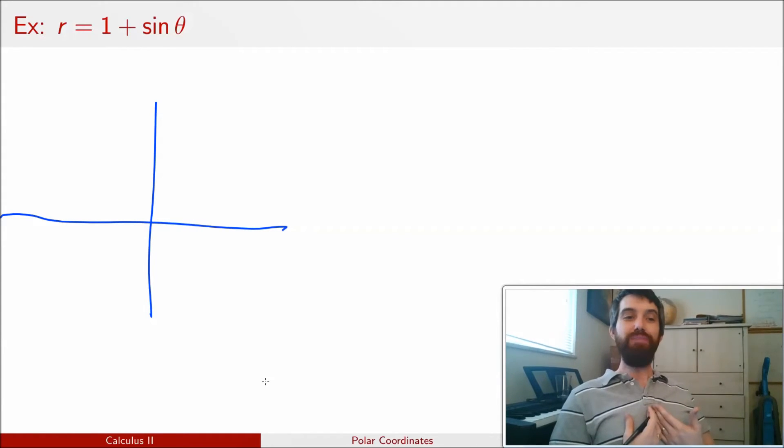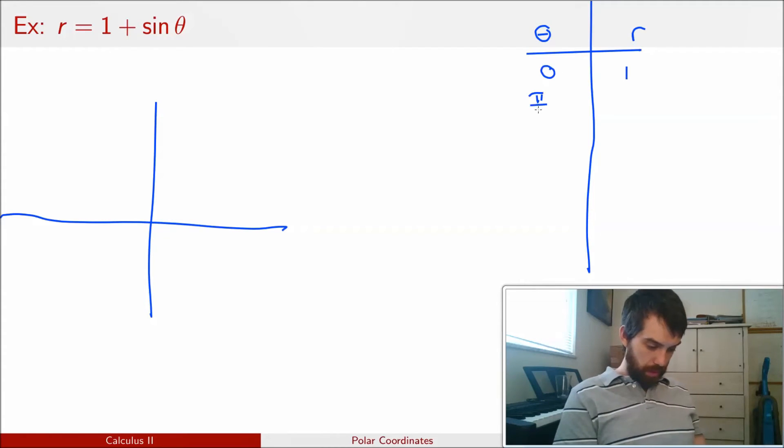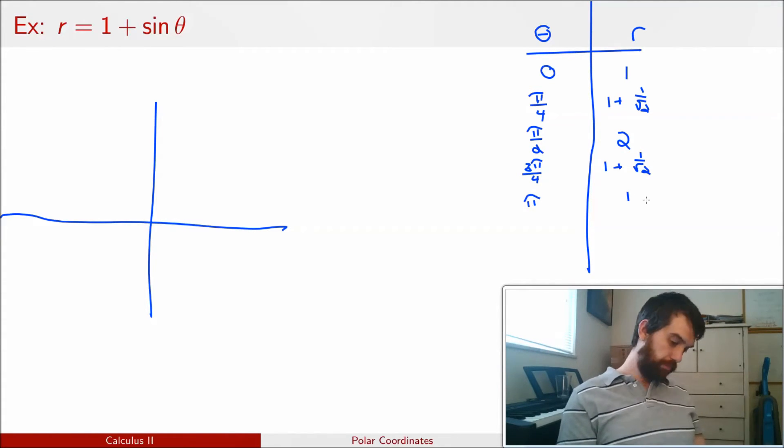Before I do anything, I'm just going to try to plug in a few values of theta and see what the r's are going to get. In other words, I'm trying to list a few different points just to try to get a handle on what's going on here. Okay, so I've evaluated r at a various bunch of early theta values and let's see if we can put them on the curve.